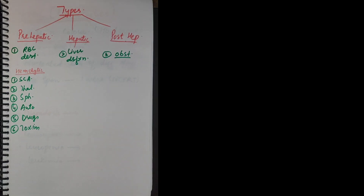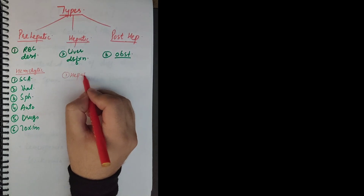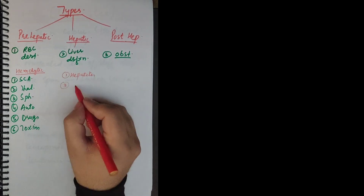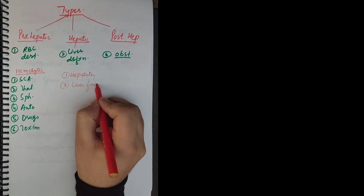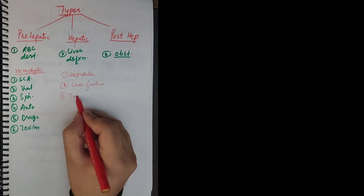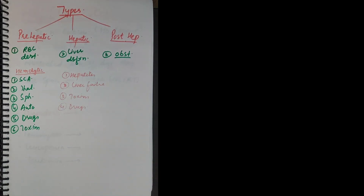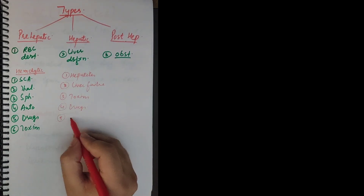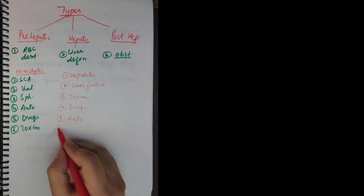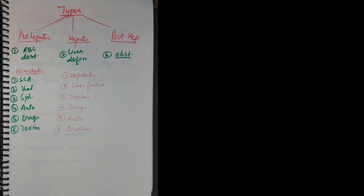Second is hepatic jaundice, which occurs whenever there is liver dysfunction. This happens in cases of hepatitis, liver failure, toxins, drugs, autoimmune causes, and also in alcoholics. Alcohol causes cirrhosis of the liver, and when the liver is affected by cirrhosis it is destroyed, causing hepatic jaundice. The problem in this type is in the liver itself.